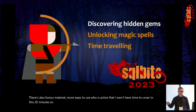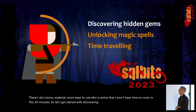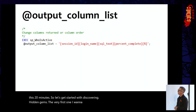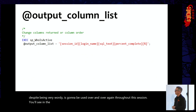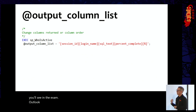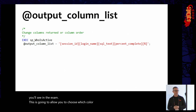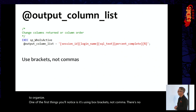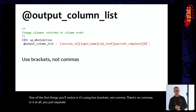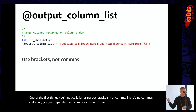Let's get started with discovering hidden gems. The very first one I want to talk about is output_column_list, which, despite being very wordy, is going to be used over and over again throughout this session. Output_column_list is going to allow you to choose which columns you want to see and organize them. One of the first things you will notice is it uses box brackets, not commas. There are no commas at all — you just separate the columns using box brackets.